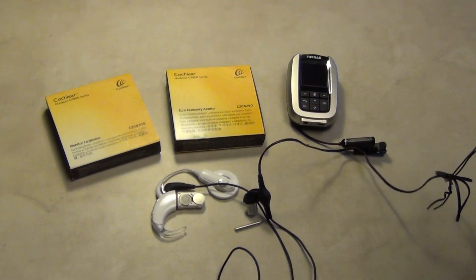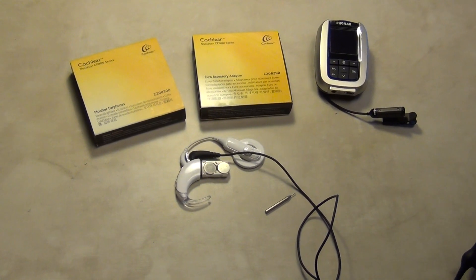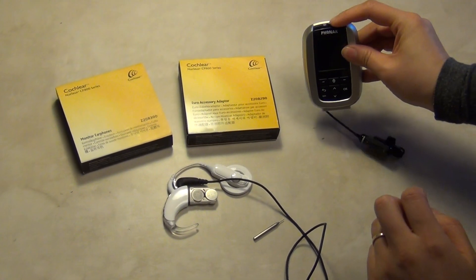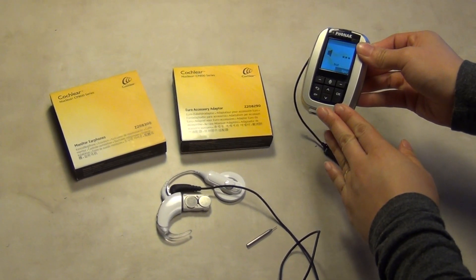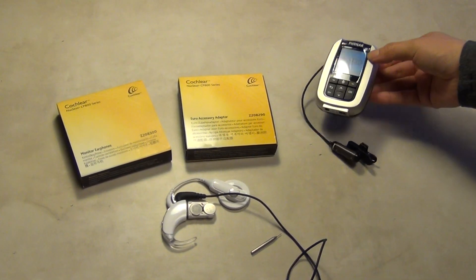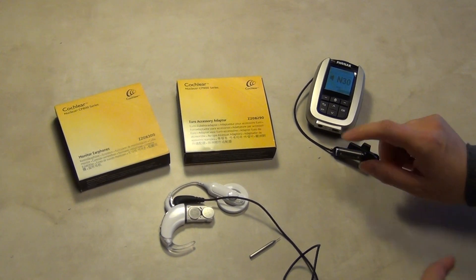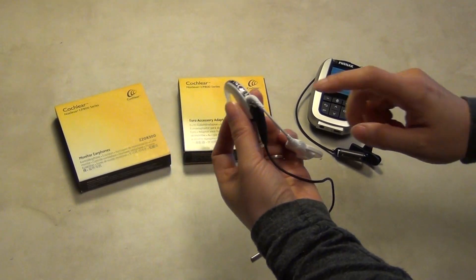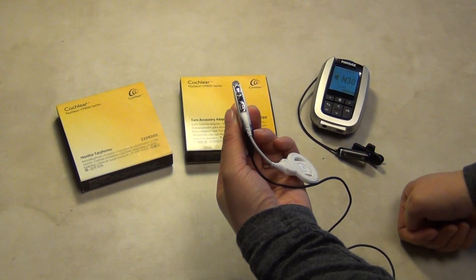And take a listen. Turn on your transmitter. As soon as the channel number appears on the screen, there should now be signal coming in from the FM microphone as well as environmental sounds coming into the microphones on the processor.